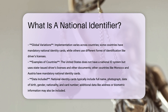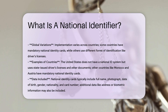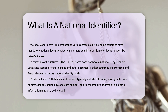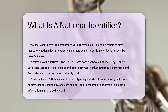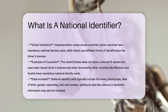Technology and uniqueness: National identifiers can be issued in various forms, including paper-based and digital. Digital ID systems use technology for data capture, validation, storage, and transfer. These systems aim to uniquely identify individuals, ensuring that each identity is claimed by only one person.